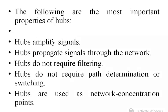The most important properties of a HUB are: it amplifies signals; it propagates signals through the network; it does not require filtering; it does not require path determination or switching; and it is used as a network concentration point.